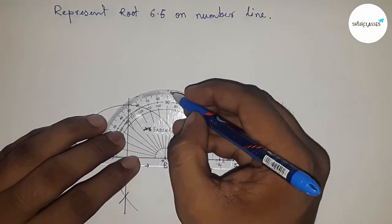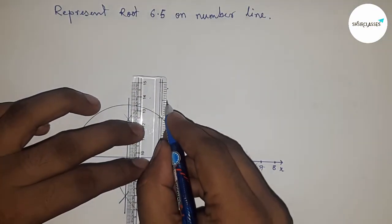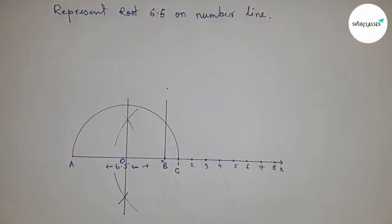Next, draw a 90-degree angle at point B using a protractor. Join this, which intersects the semicircle at point D.